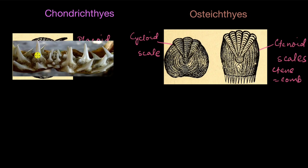In Chondrichthyes, the placoid scales also form teeth. So the scary teeth you see in the mouths of sharks are actually nothing but modified placoid scales.